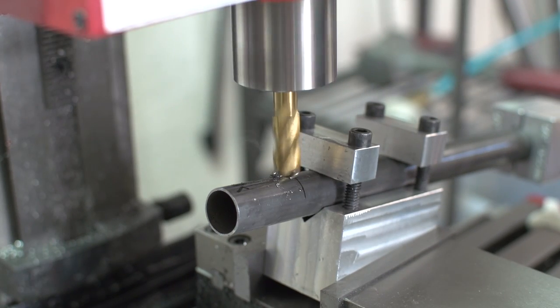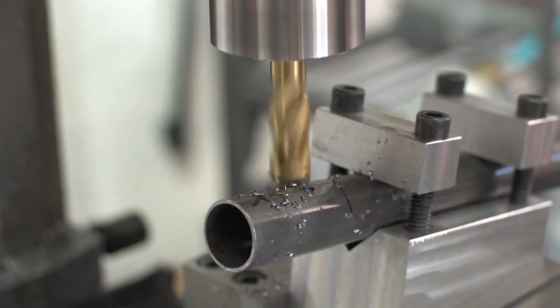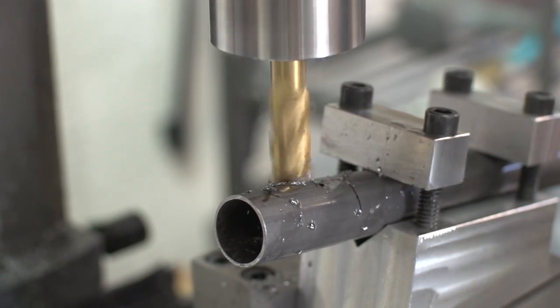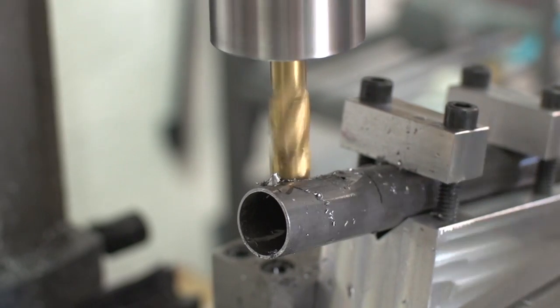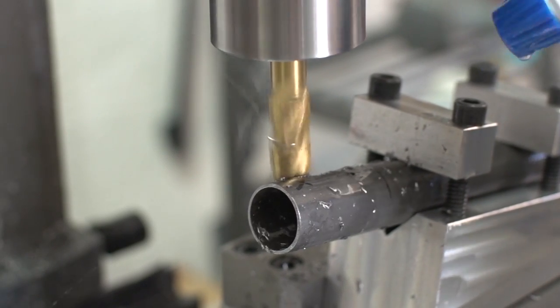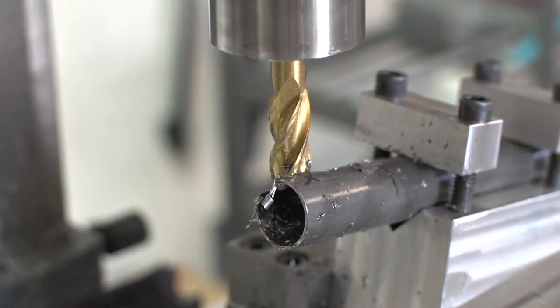Yeah, so what I'm doing here is the tubes get really close together. They actually, so they need to come together where they get welded onto the seat tube. And unless I cut them, they won't be close enough together. You'll see what I mean a little later on.